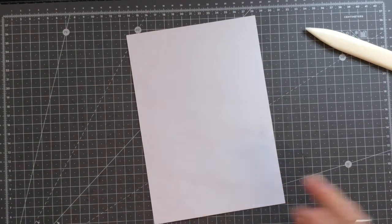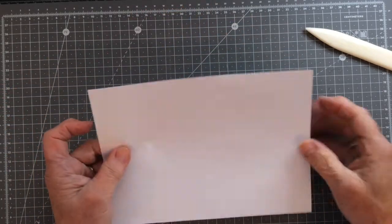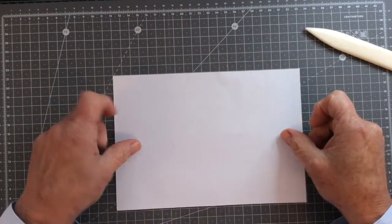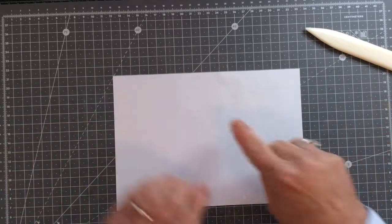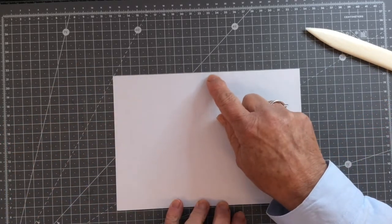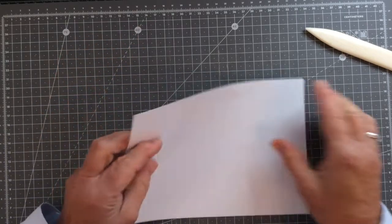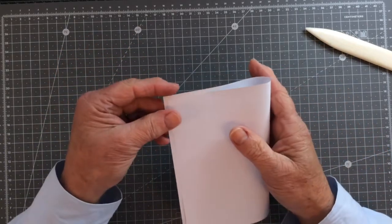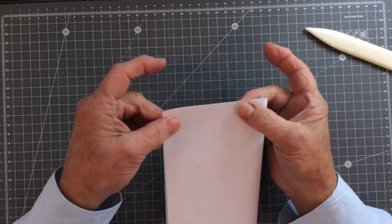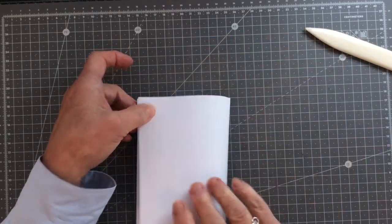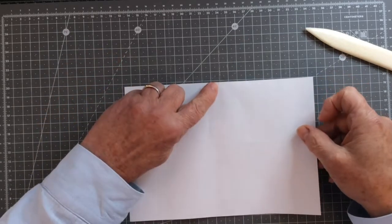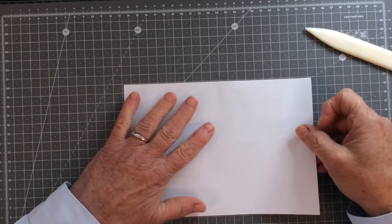Now, the first thing we do for this is put it in this orientation which is a landscape orientation and you want to find your centre point at the top here. Now, you can measure it but all I'm going to do is just fold my piece of paper over and then I'm just going to pinch it at the top like so and now I know that that is my centre point